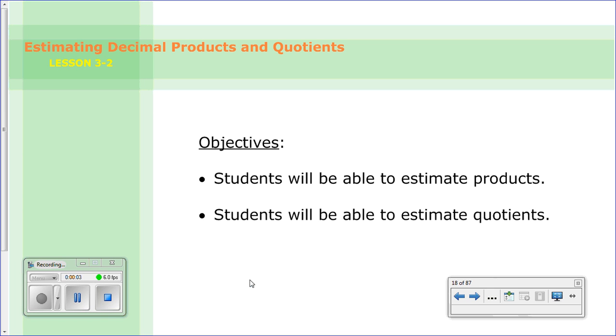Good evening 7th graders. In lesson 3-2 we're going to look at estimating decimal products and quotients. Tonight's lesson has two main objectives. First you're going to be able to estimate products and secondly you will be able to estimate quotients.